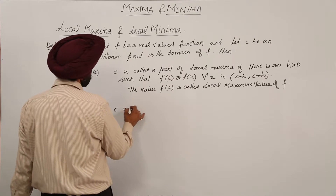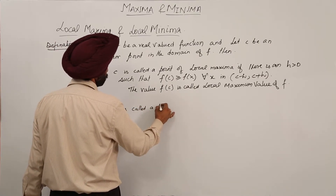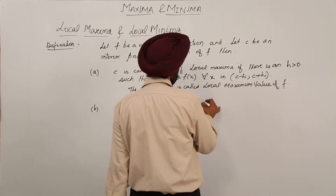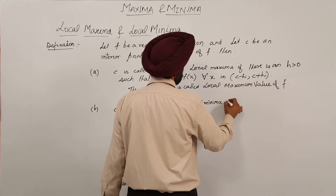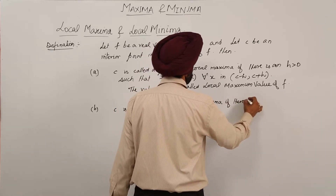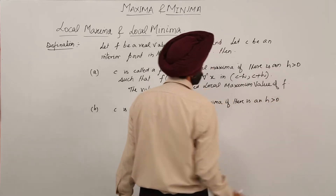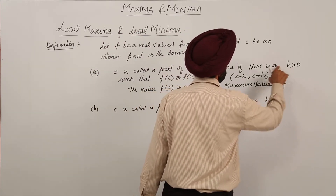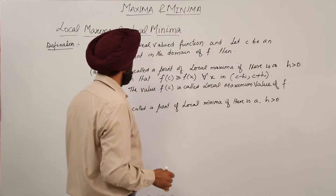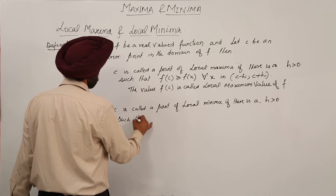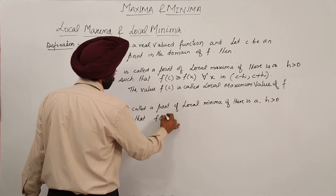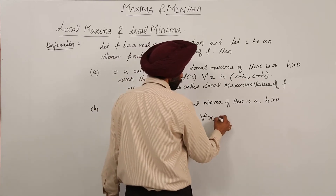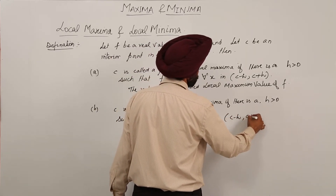Part B: c is called a point of local minima if there is an h greater than 0 such that f(c) is less than or equal to f(x), for all x in (c minus h, c plus h).